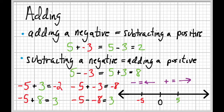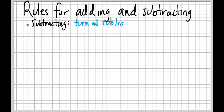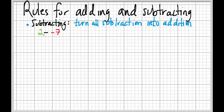That's a good method for visual thinkers. For those who prefer working by the rules, let's go through the rules for adding and subtracting. The first rule for subtraction is simple: turn all subtraction into addition. The best way to handle subtracting is by not subtracting — by adding instead. For example, two minus negative seven becomes two plus positive seven.